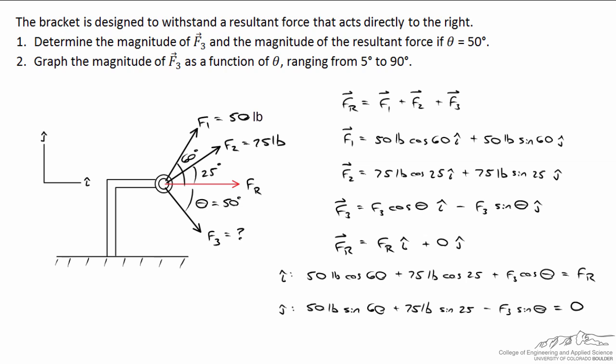Let's count up the number of equations and the number of unknowns. We've got one unknown is F3, theta we know is 50 degrees for this part of the problem. Our second unknown is FR. If I come through the second equation, here's my first unknown, again F3, and again we know theta. So I've got two equations for the i and the j hat direction, two equations and two unknowns, and when I solve for those two equations I find that the magnitude of F3 is equal to 98 pounds, and the magnitude of the resultant force FR is equal to 156 pounds.